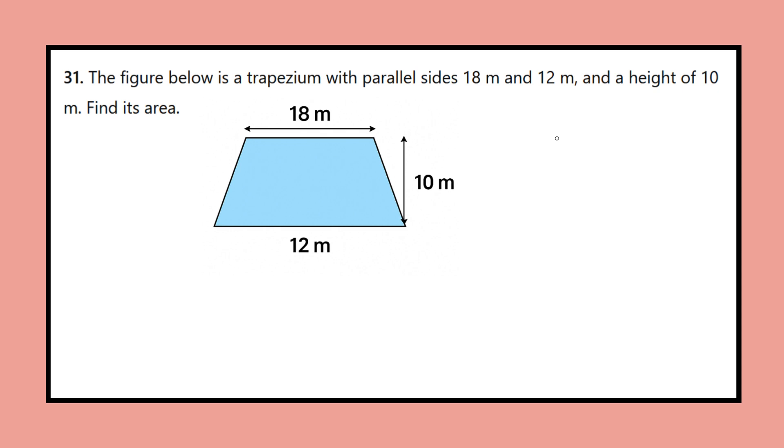Question 31: The figure below is a trapezium with parallel sides 18 m and 12 m and a height of 10 m. Find its area.